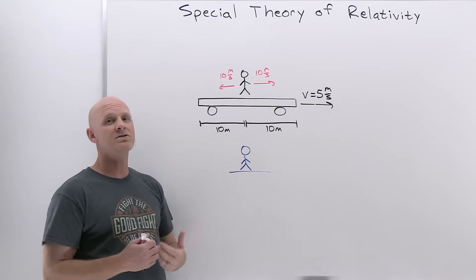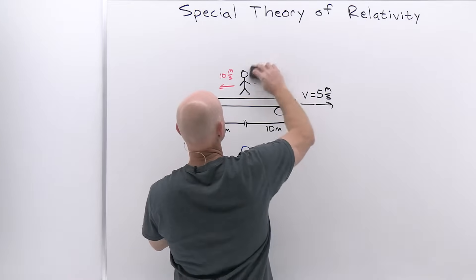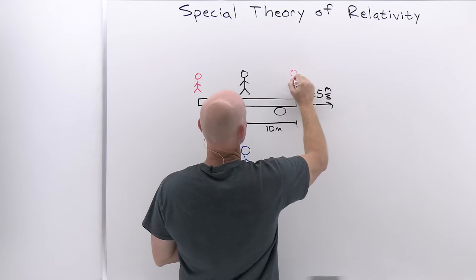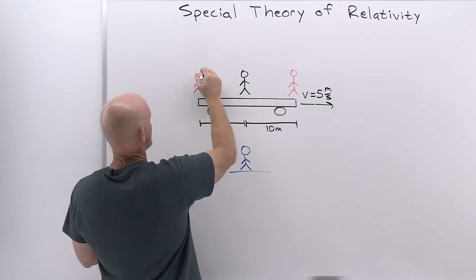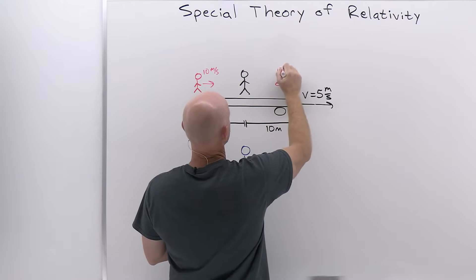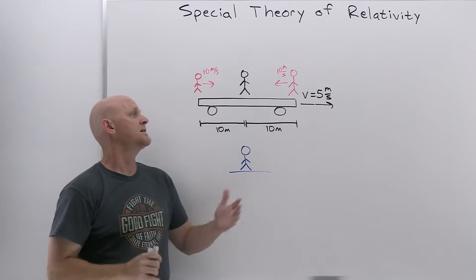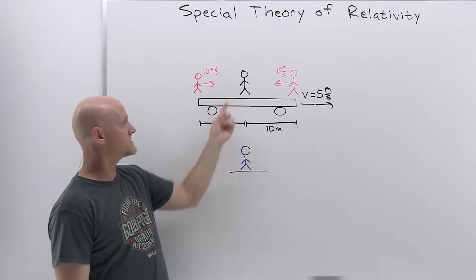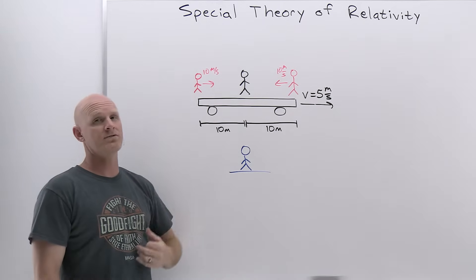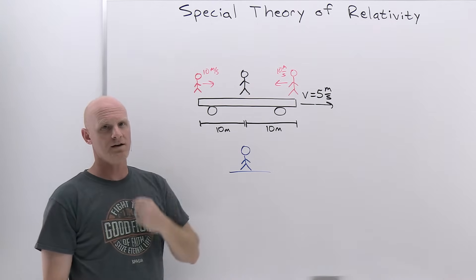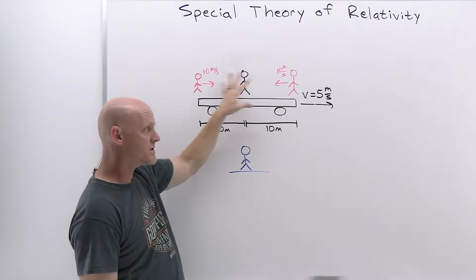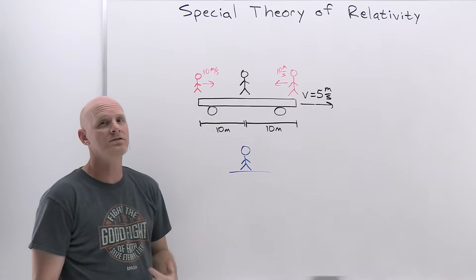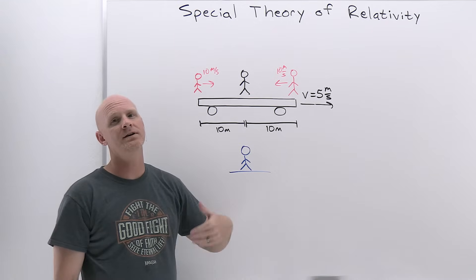Now let's change this up. Instead of me firing Nerf guns, we're going to have two people firing Nerf guns at me — one on each end of the car, both at 10 meters per second. This is a 20-meter-long rail car and I'm standing exactly in the middle, so the bullets each have to travel 10 meters to hit me. Relative to me, each bullet travels 10 meters at 10 meters per second, taking one second. So these two bullets are going to reach me at exactly the same time.